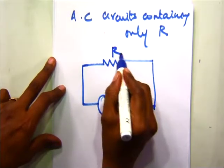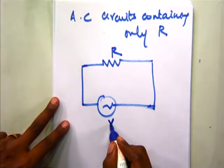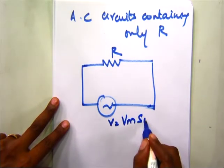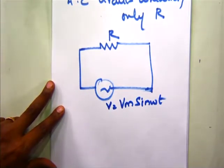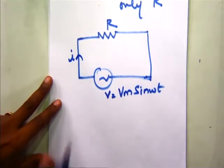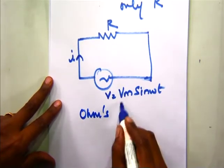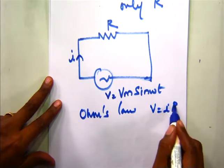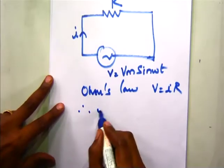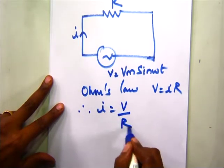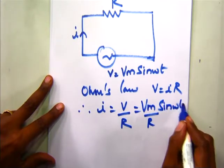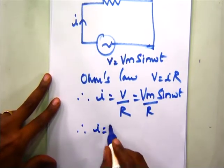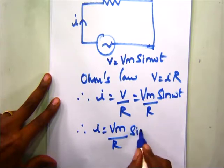We are going to consider a resistor R connected to an alternating voltage supply given by V equal to Vm sin omega t. This will cause a flow of current in the circuit, and this current will be given by Ohm's law. Ohm's law states V is equal to IR. Therefore, the current I in the circuit will be equal to Vm upon R sin omega t, so we can write I equals Vm by R sin omega t.